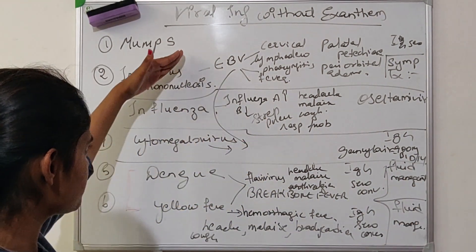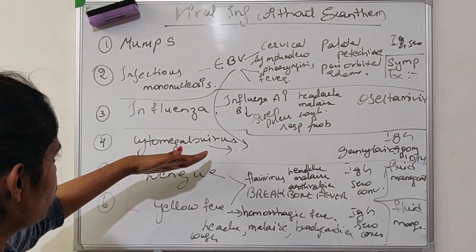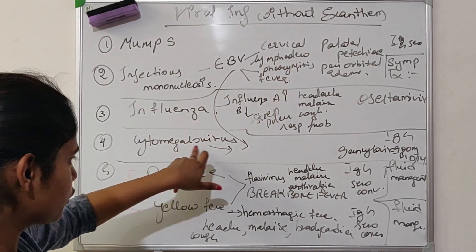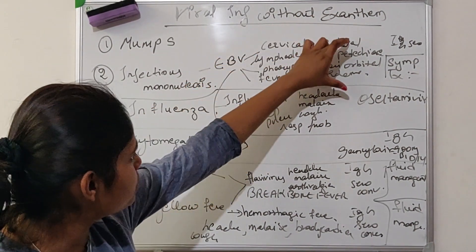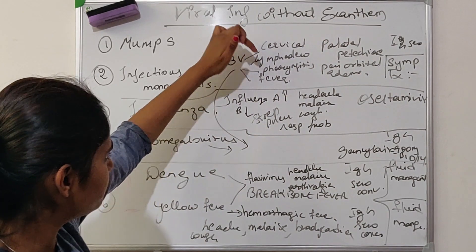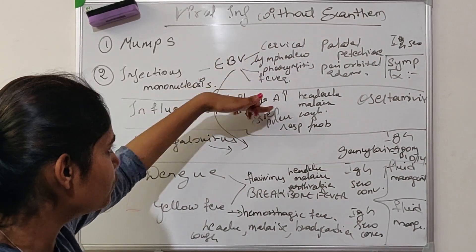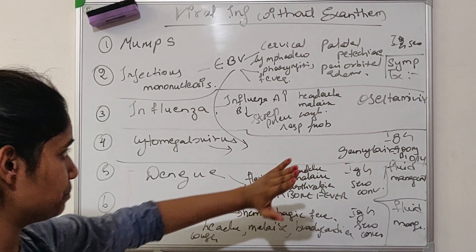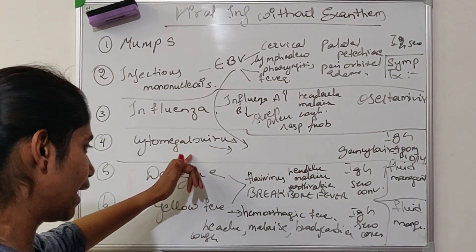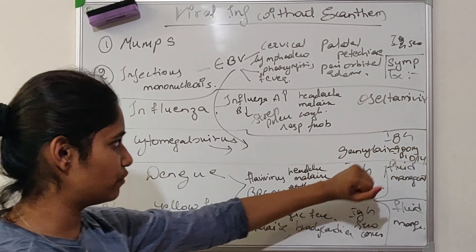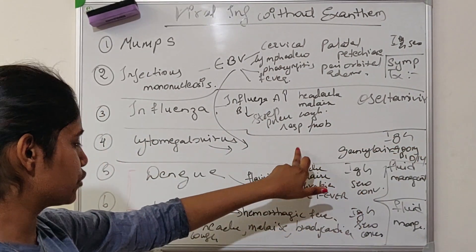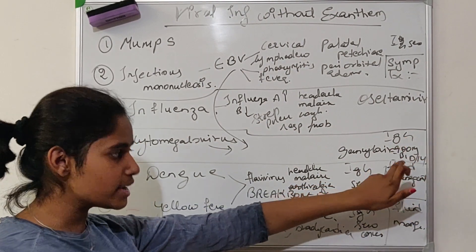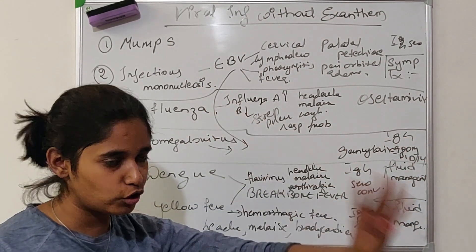Cytomegalovirus is similar to infectious mononucleosis, caused by cytomegalovirus. The symptoms are cervical lymphadenopathy, pharyngitis, fever, palatal petechiae, and periorbital edema. Diagnosis is IgG seroconversion. Treatment is Ganciclovir 900 mg twice a day for 14 days.